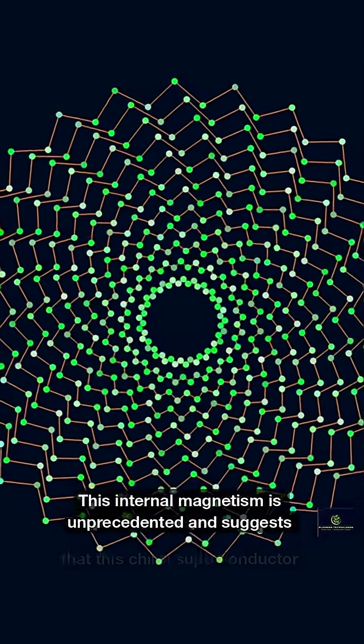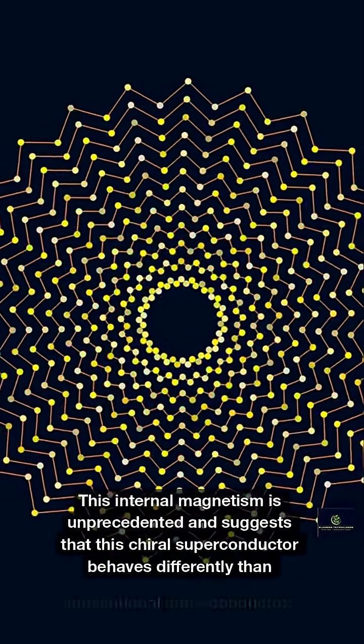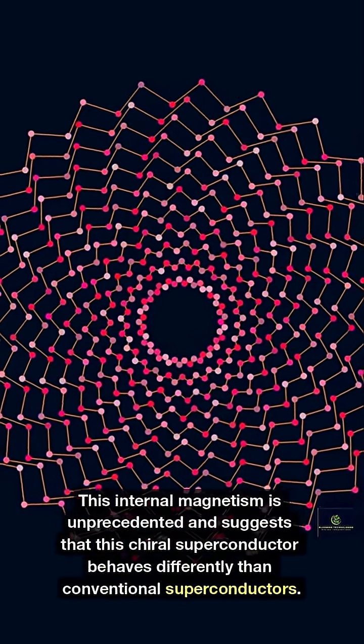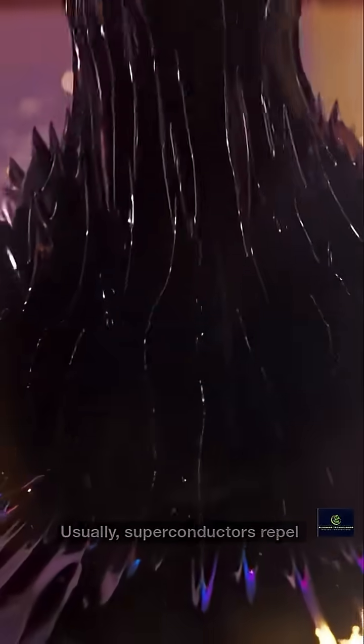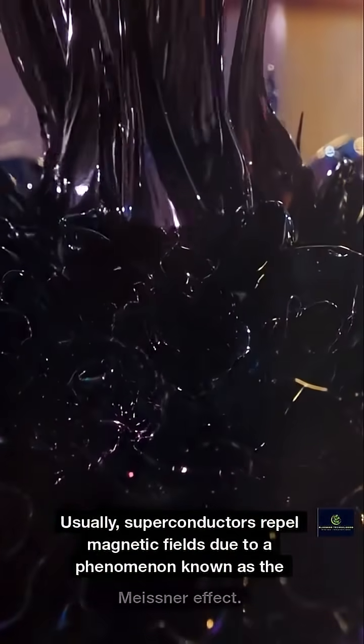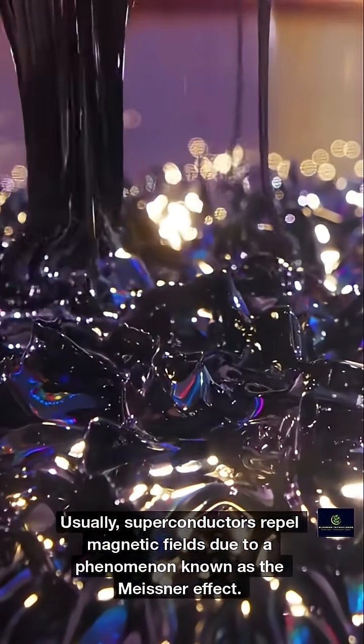This internal magnetism is unprecedented and suggests that this chiral superconductor behaves differently than conventional superconductors. Usually, superconductors repel magnetic fields due to a phenomenon known as the Meissner effect.